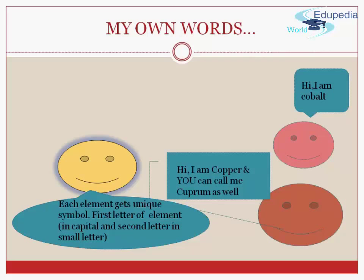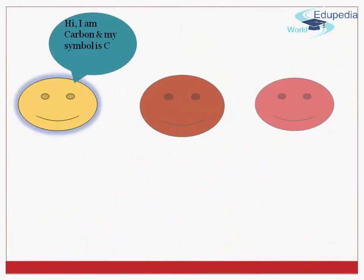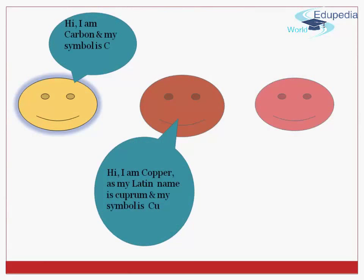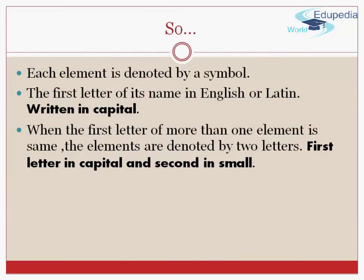So now we have unique symbols for each of us. I am Carbon and my symbol is C. Hello, I am copper as my Latin name is Cuprum and my symbol is Cu. Hello, I am Cobalt and mine is Co. So friends, I hope you have understood now how symbols are actually represented to the elements to form a unique symbol.